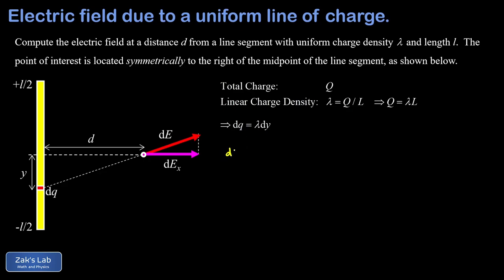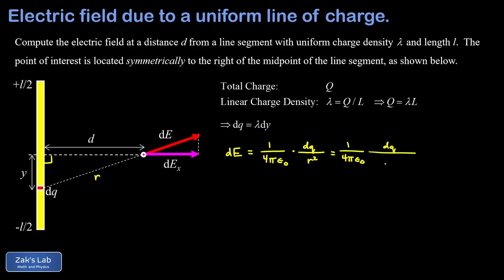We begin by finding the magnitude of dE and then determine its x component. Applying the point charge formula, we get 1 over 4 pi epsilon zero, times dq, divided by the squared distance between the charge and the observation point. The distance r is the hypotenuse of a right triangle, so r squared equals d squared plus y squared, which goes in the denominator.